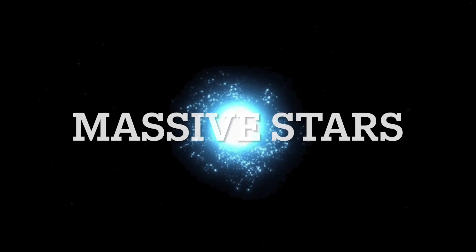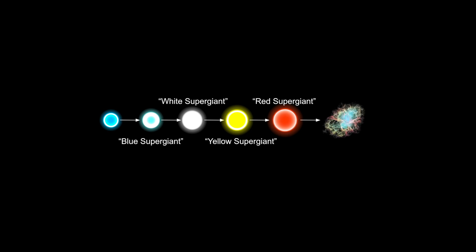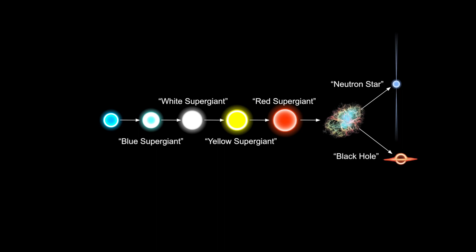And there's the really massive ones. They basically just undergo a sequence of very self-explanatory supergiant phases: blue supergiant, white supergiant, yellow supergiant, and actually hypergiant as well, and red supergiant. Now they blow up in a supernova explosion, and there are two possible outcomes — either they become a neutron star, which is when their core is less than the Oppenheimer limit, or they become black holes if their core is massive enough.